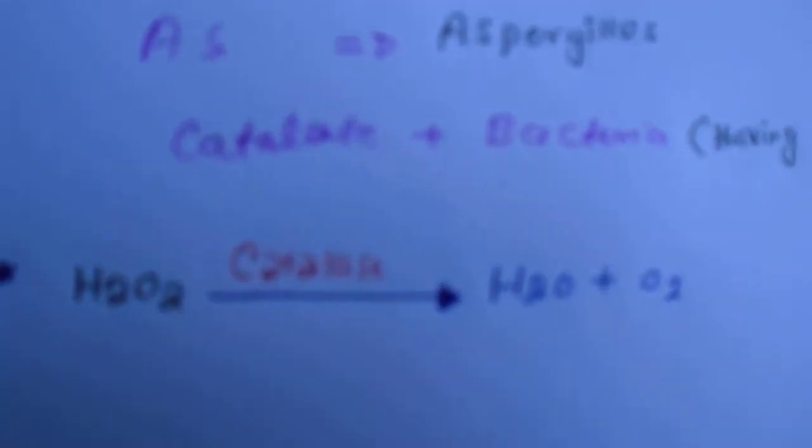Now why is it important? Because hydrogen peroxide, or H₂O₂, is used in our body during the oxygen-dependent killing mechanism, and it destroys bacteria. But hydrogen peroxide can only destroy catalase-negative bacteria — it cannot destroy catalase-positive bacteria.